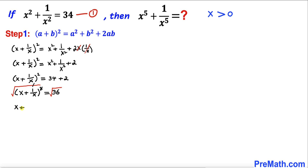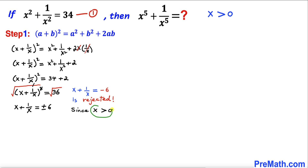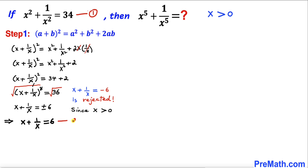So x + 1/x = ±√36 = ±6. Since x > 0, x + 1/x = −6 is rejected. Therefore x + 1/x = 6. Let's call this equation number two.